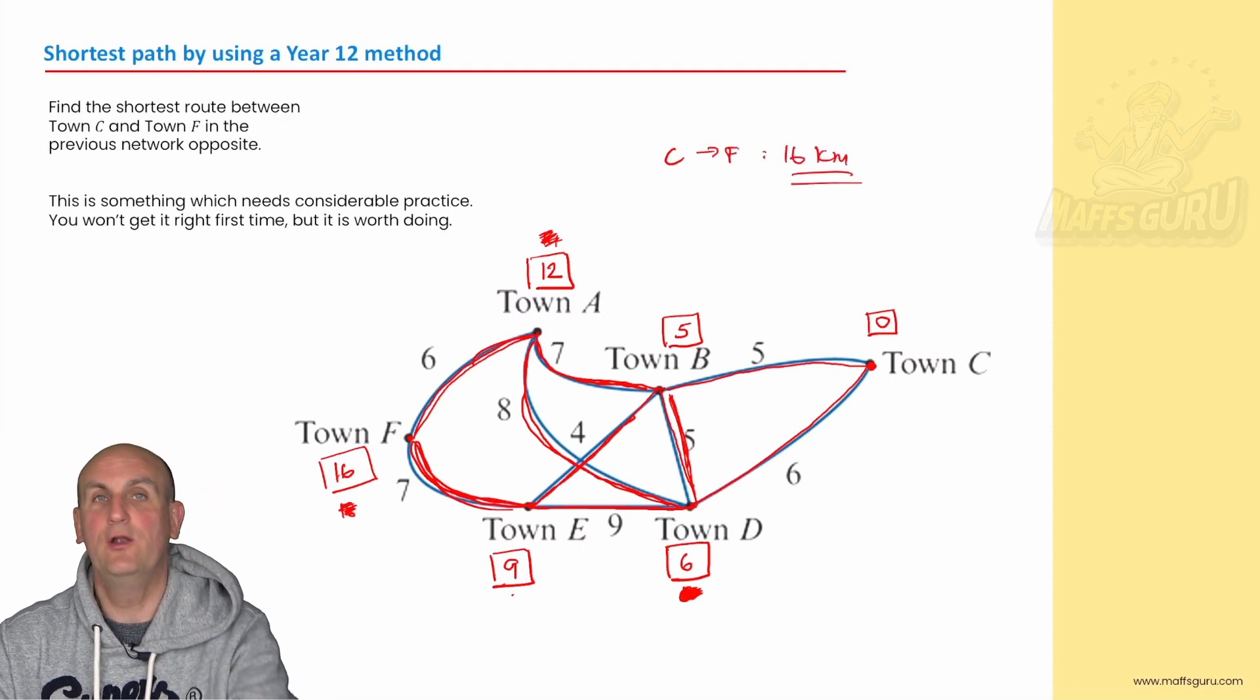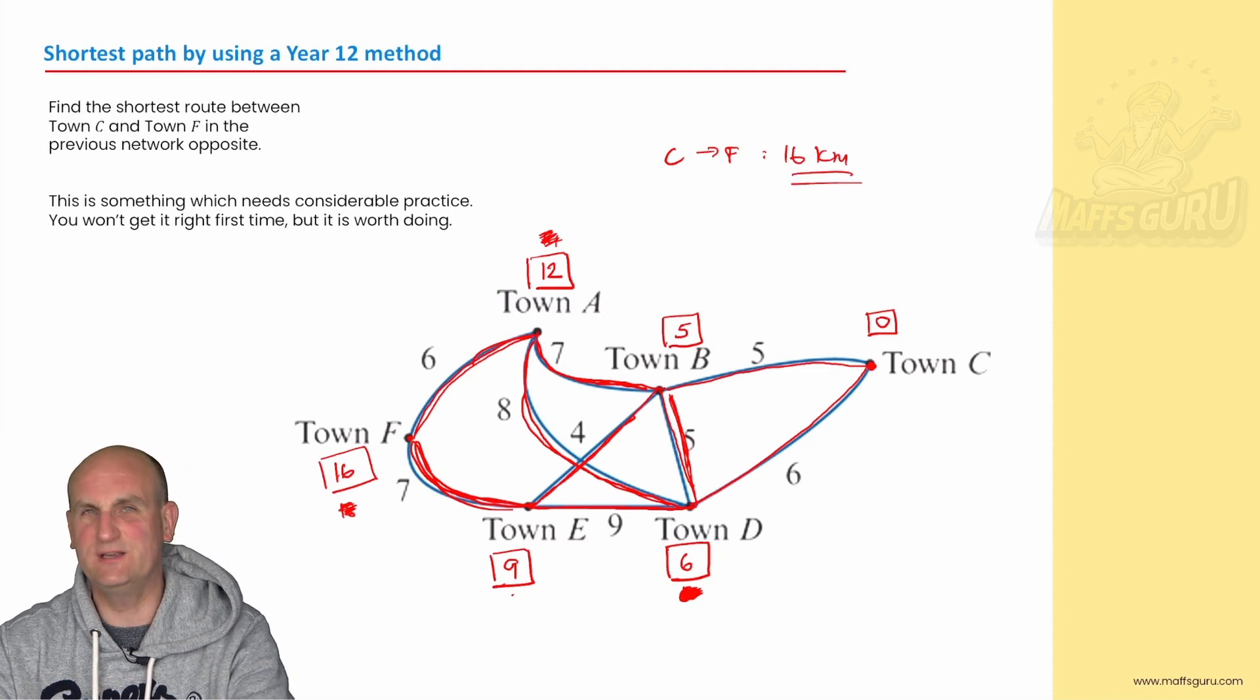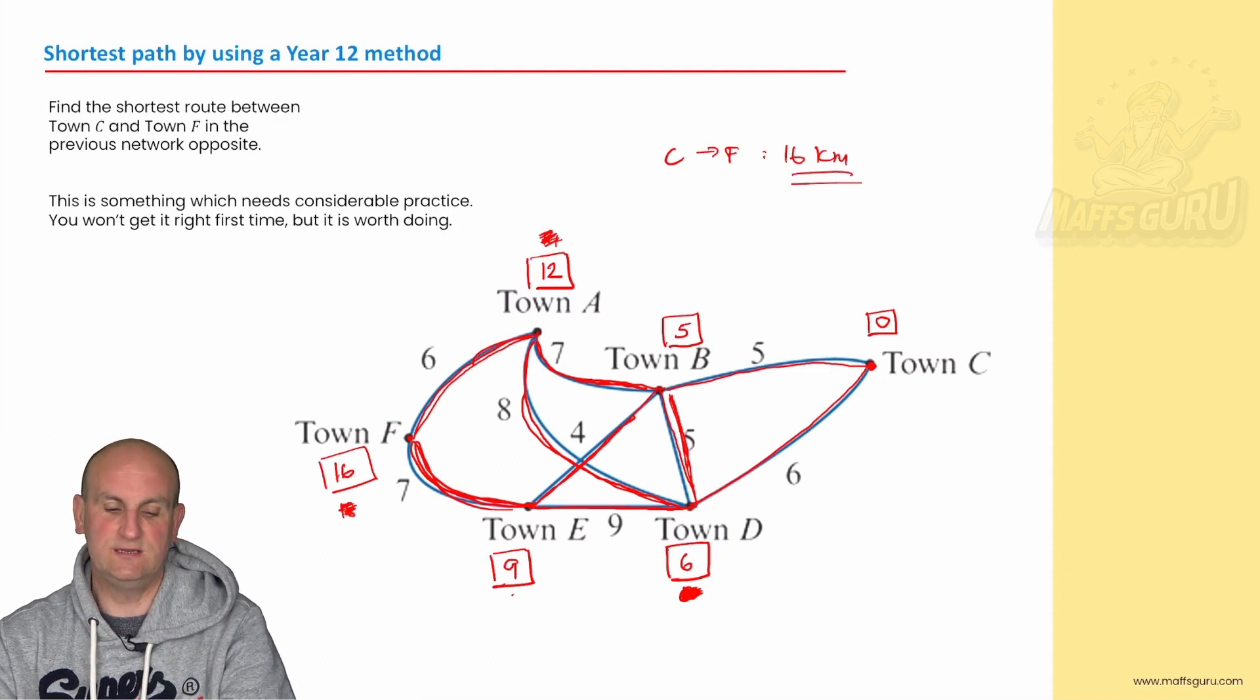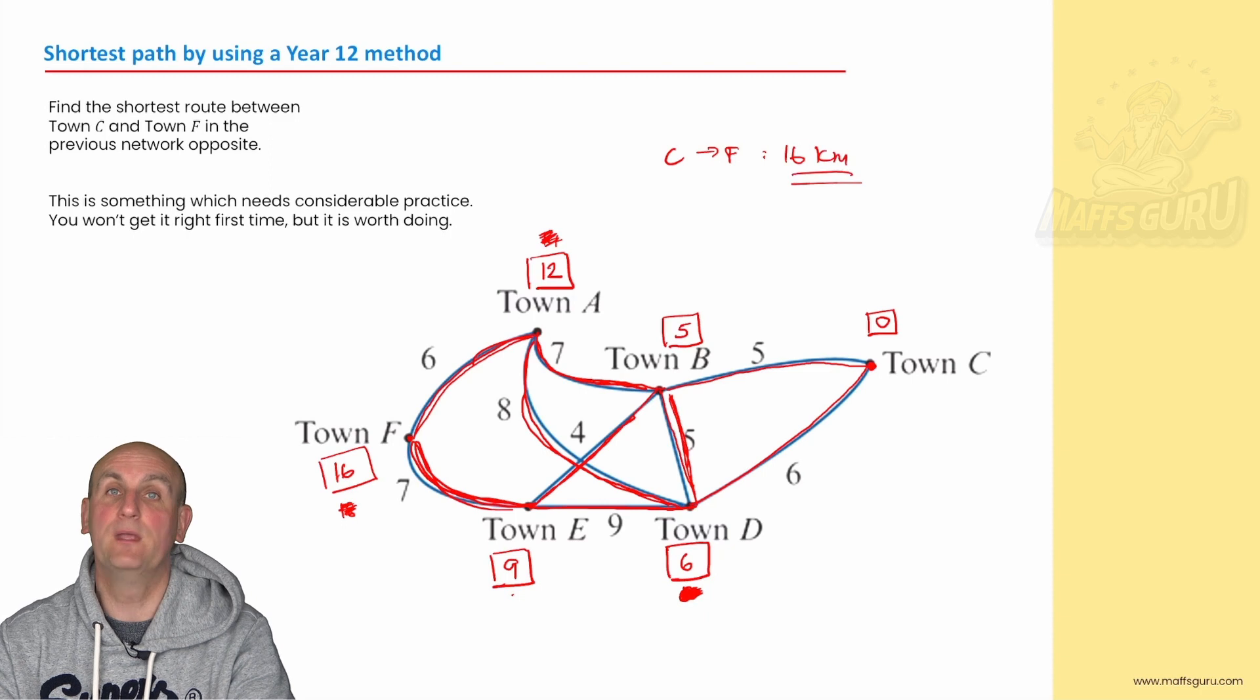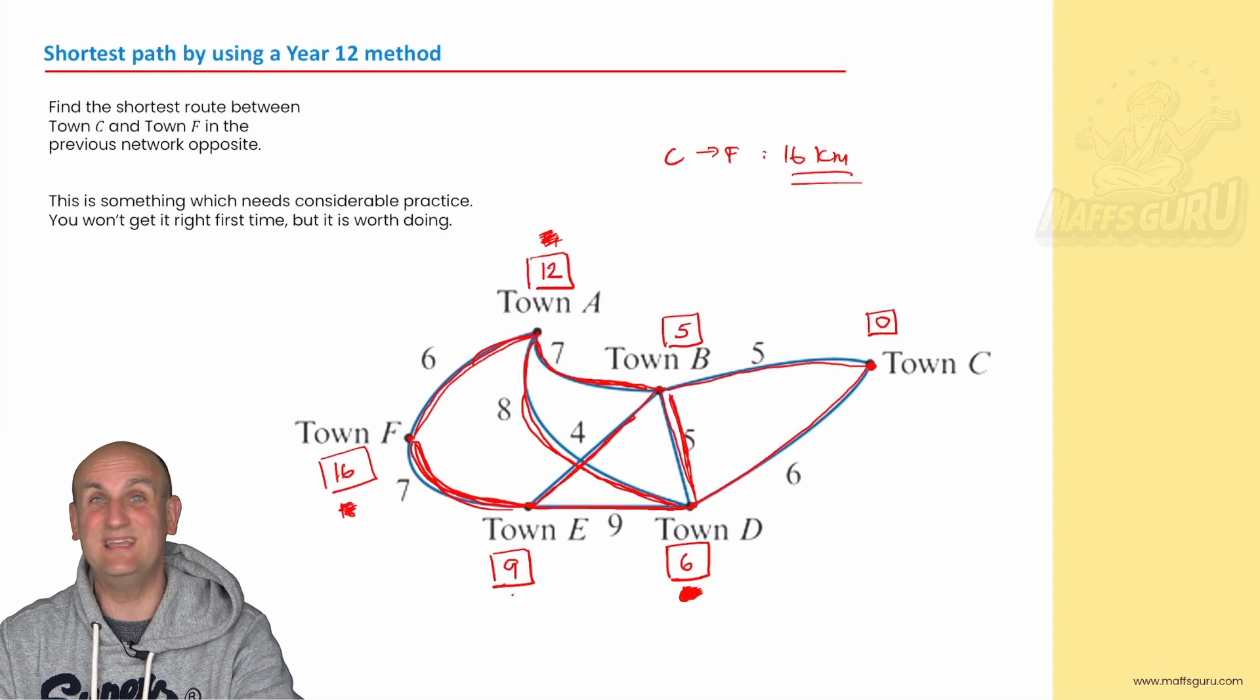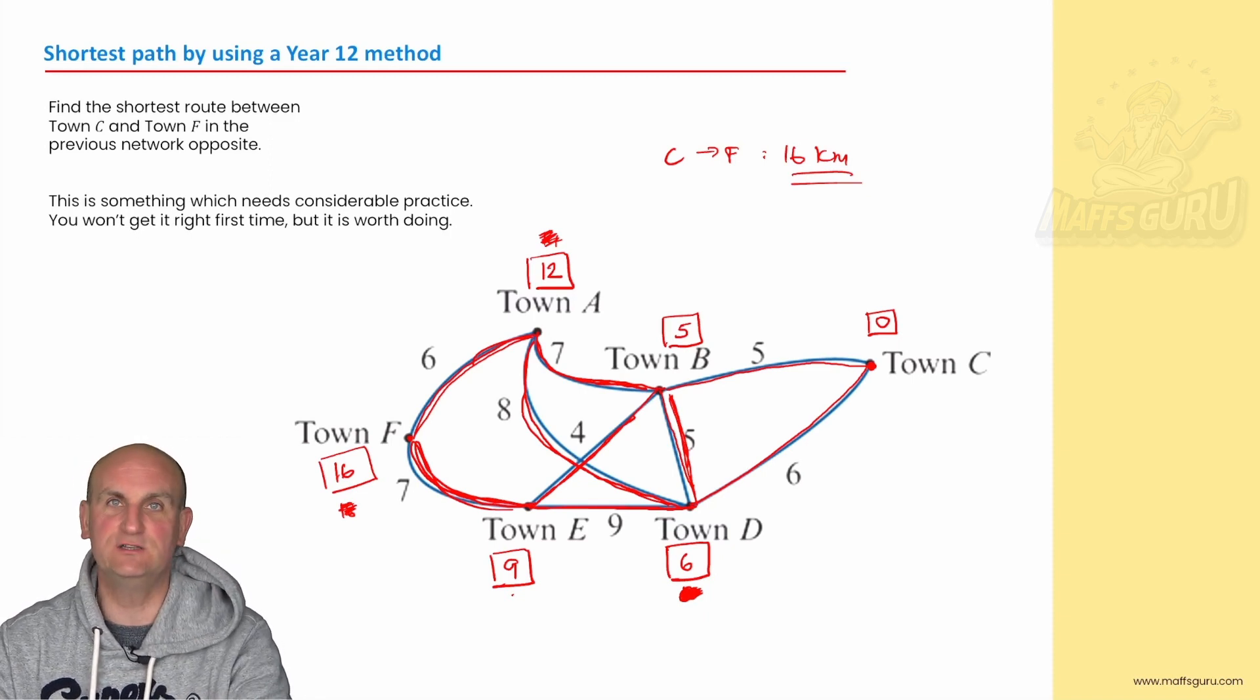Now, those of you who did that in your head, respect. If you can do it by inspection, awesome. Don't forget that was a relatively simple example. But Dijkstra allowed us to sort of come up with this to find the shortest path. And the good news is if you get the algorithm right, you get it right every single time. And there are some challenging questions next year.